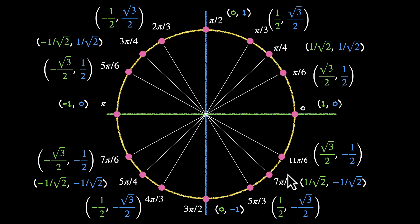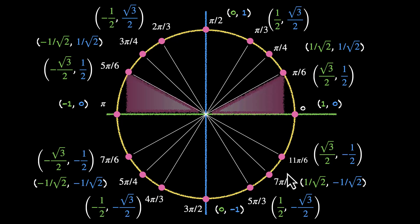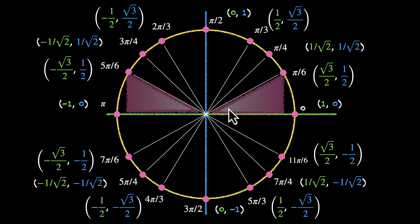How did we figure them out? We used congruent triangles. If two triangles are congruent, their lengths will be the same — it's just that we are moving in different directions. For this point pi by 6, we move root 3 by 2 along the positive x-axis, but for this point 5 pi by 6, we are moving minus root 3 by 2, which means root 3 by 2 along the negative x-axis. That's how we got the points, and through these points we got the ratios.